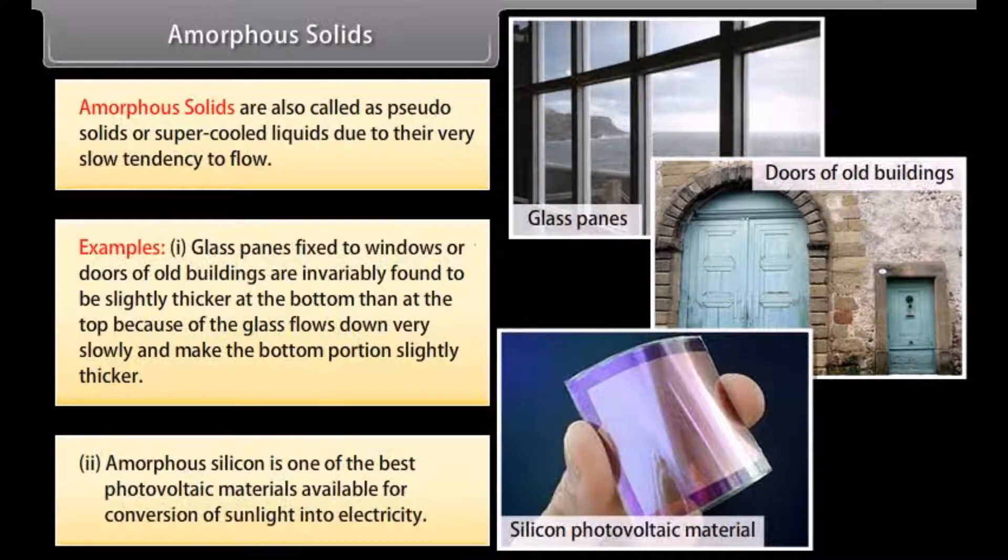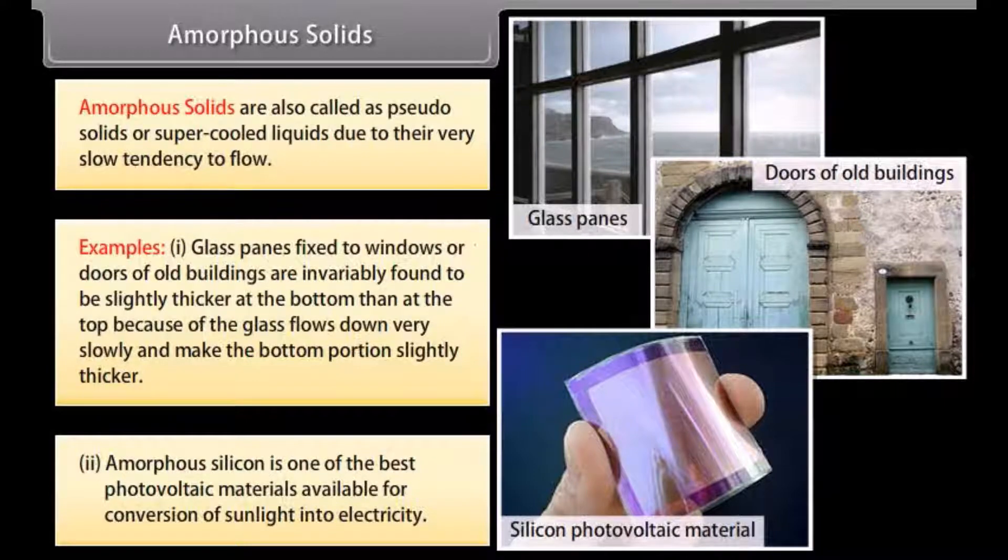Amorphous silicon is one of the best photovoltaic materials available for conversion of sunlight into electricity.